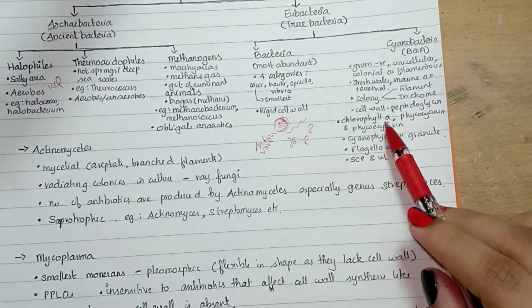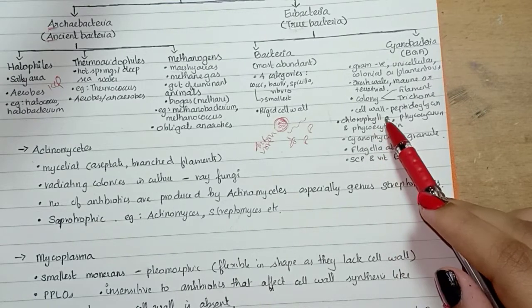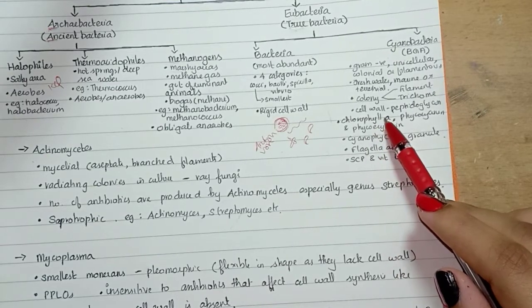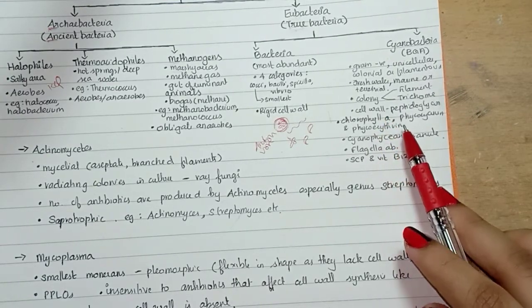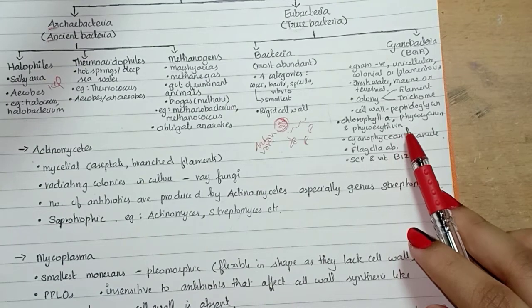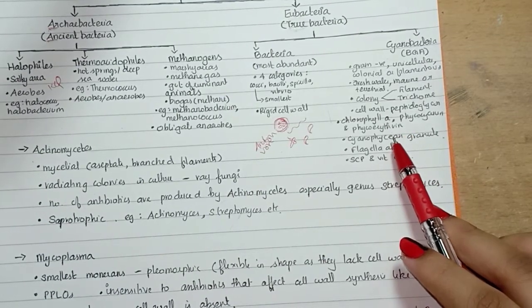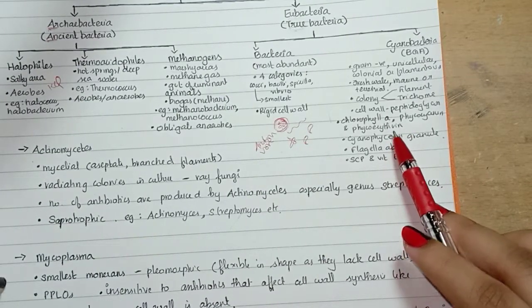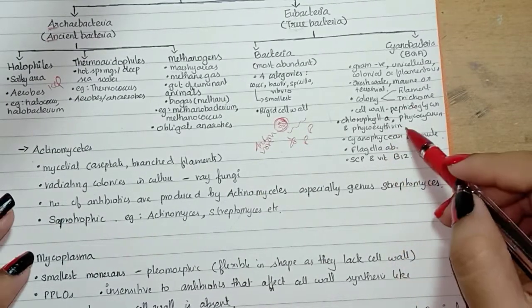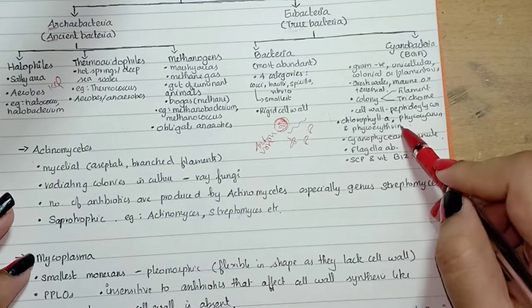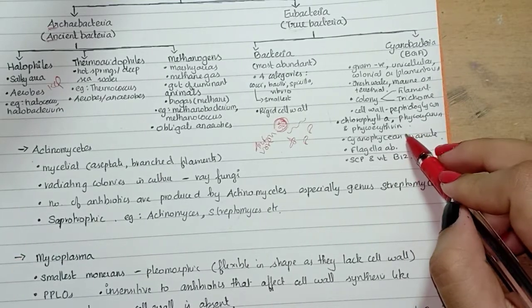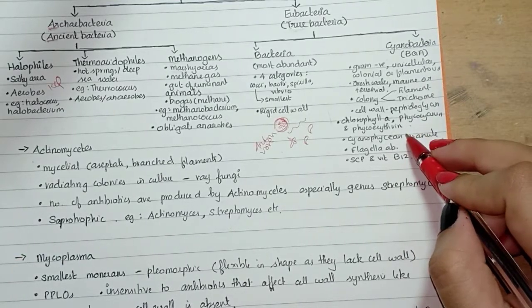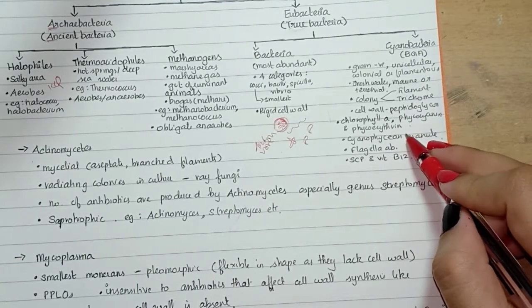Cyanobacteria are photosynthetic autotrophs. In blue-green algae, photosynthesis occurs in chromatophores or membranous lamellae.